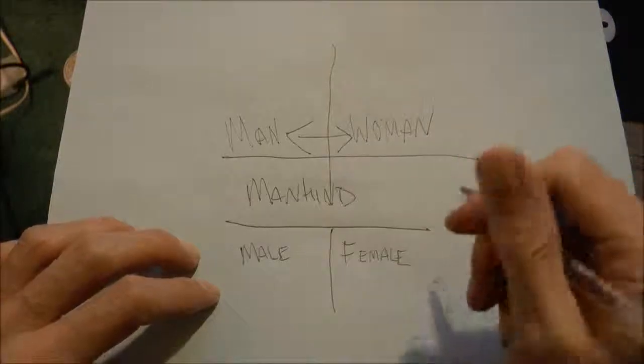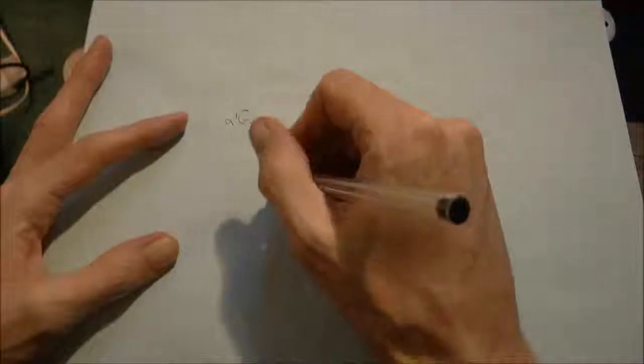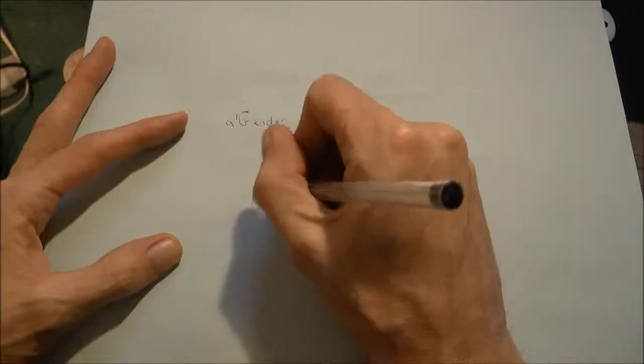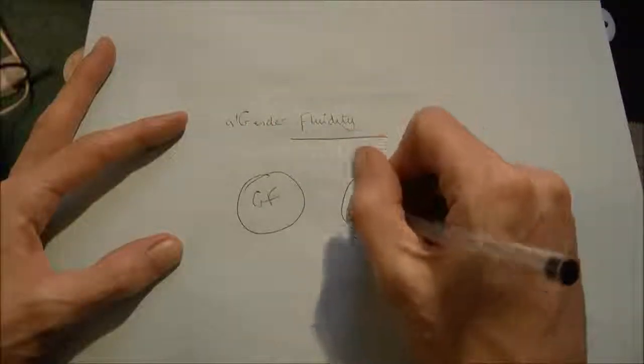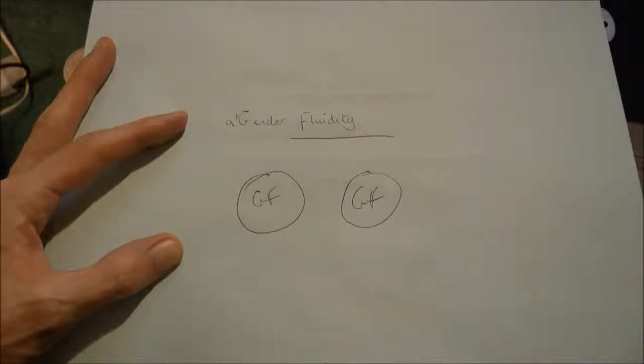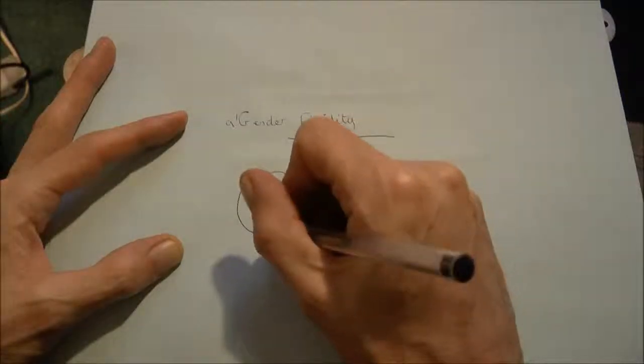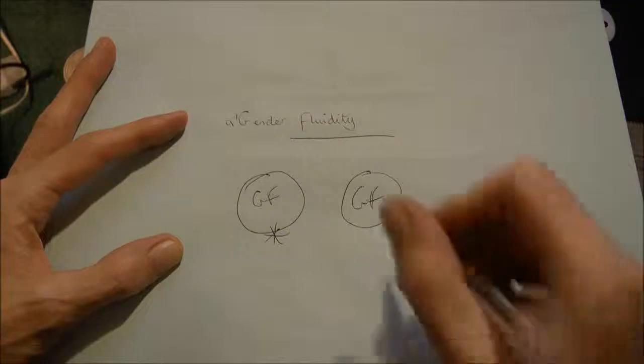Now reason this through. If it was gender fluid, so we have a GF person and we have a GF person, which one produces male seed and which one produces female seed? So which one is gender fluid now? Is it this one or is it this one?